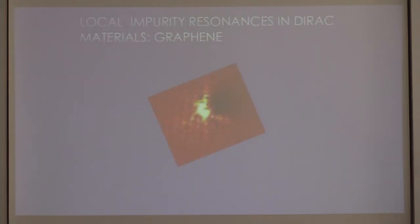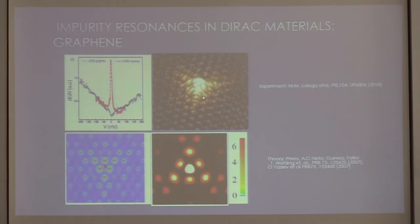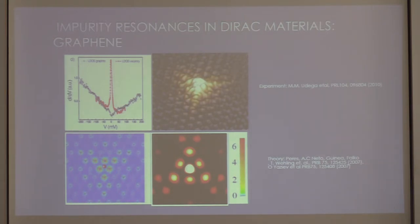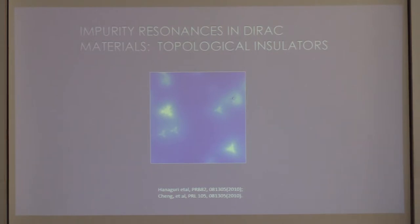Let's move on to graphene. In the case of graphene, which comes in very pristine and clean form, you have to work hard to create defects. In this particular case — data from Madrid — they irradiated graphene to knock off atoms using ion bombardment to create artificial vacancies. What happens is that you have a defect in the sea of otherwise pristine graphene electrons, and sure enough you have this resonance forming up, essentially at the nodal point.